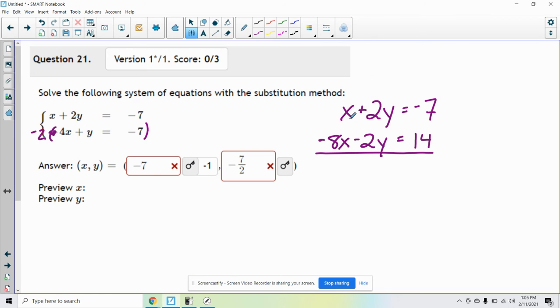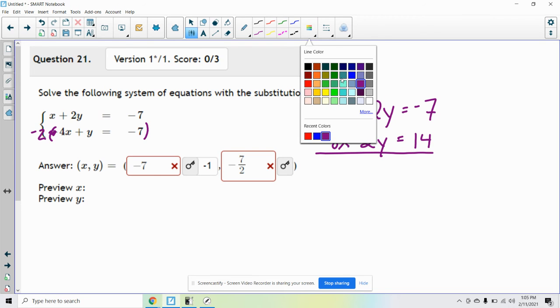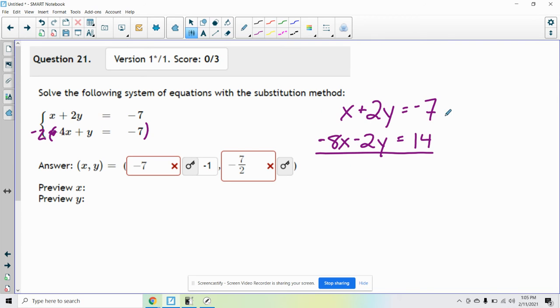So now I have matching opposite coefficients in front of the y's. So why do I do that? Once I have that, I can add the equations together and the y should cross out. So I have x plus negative 8x, that's negative 7x. 2y and negative 2y, they cross out, that's why I did that.